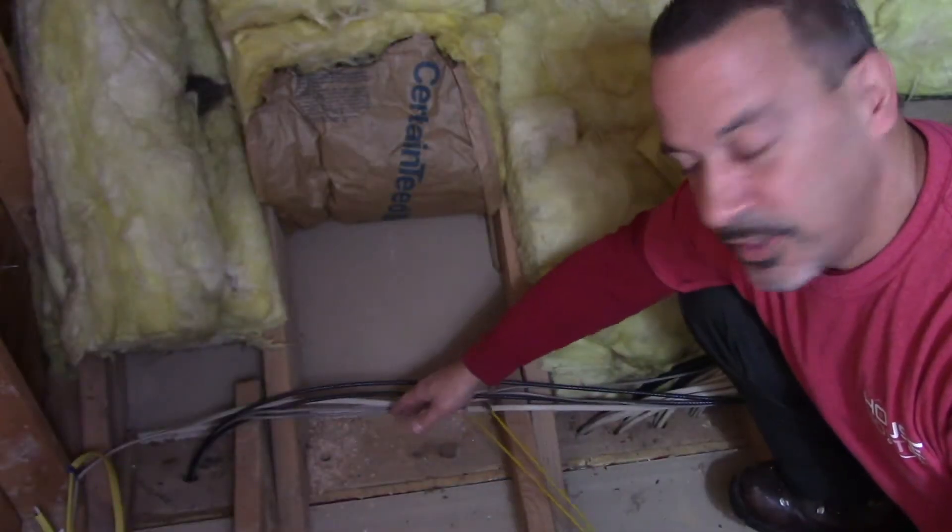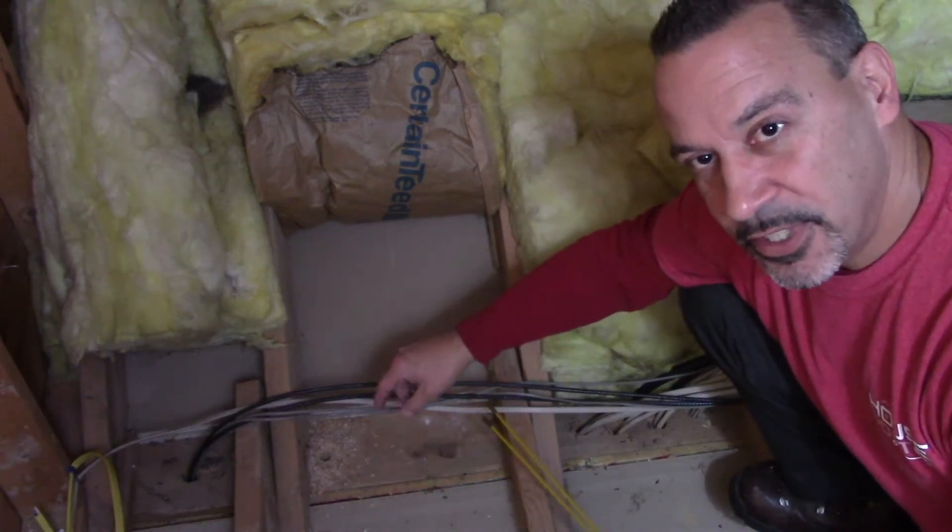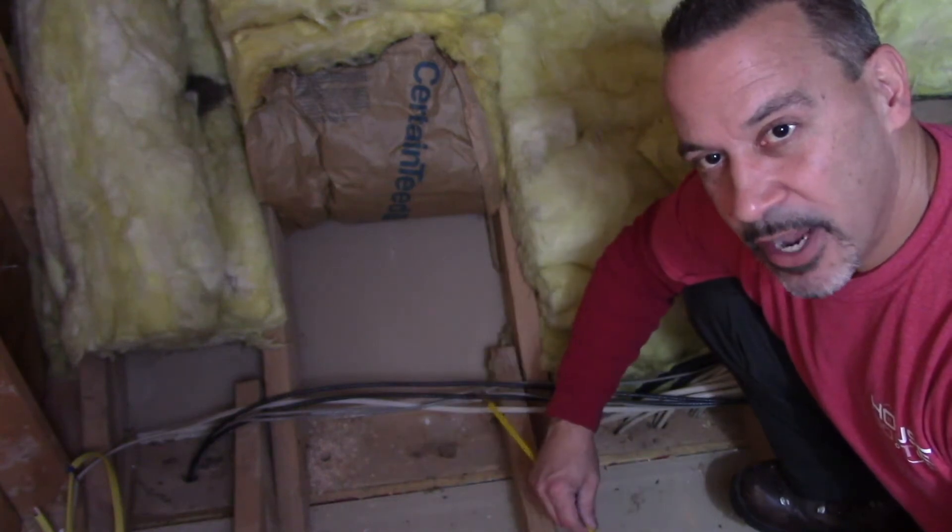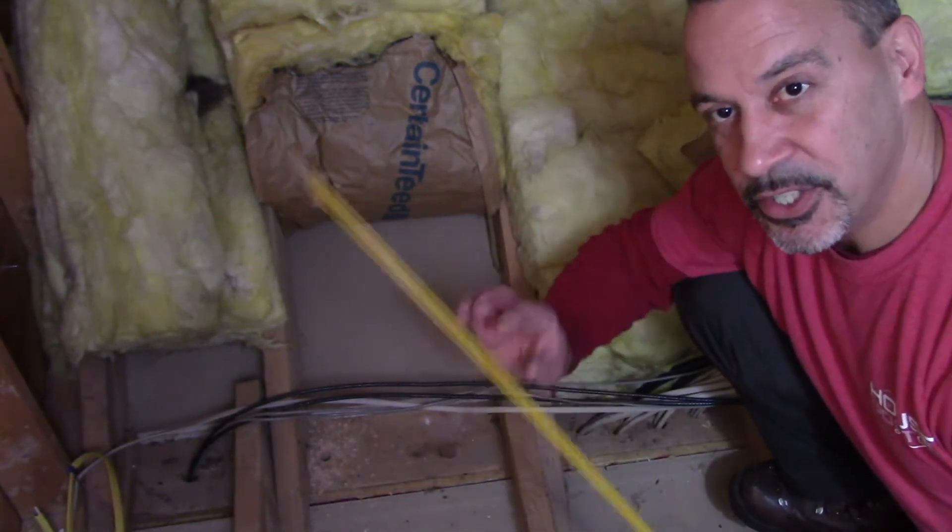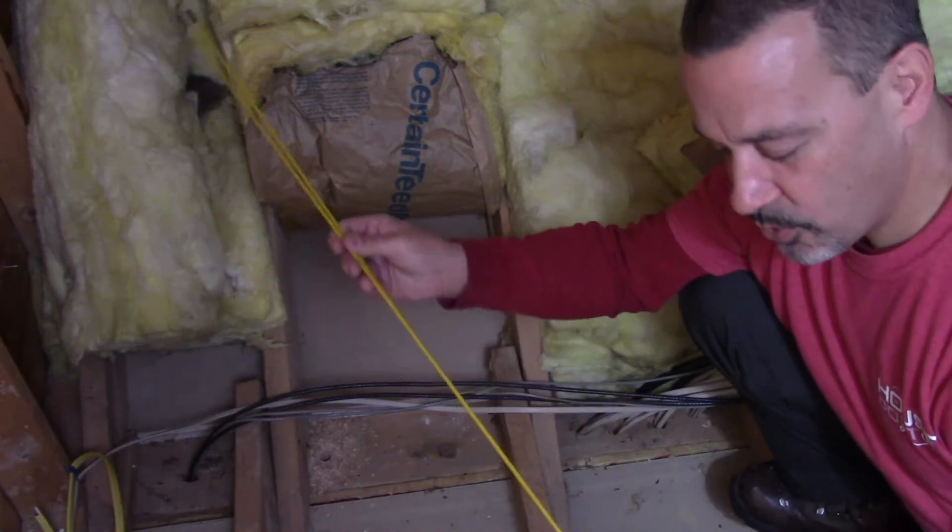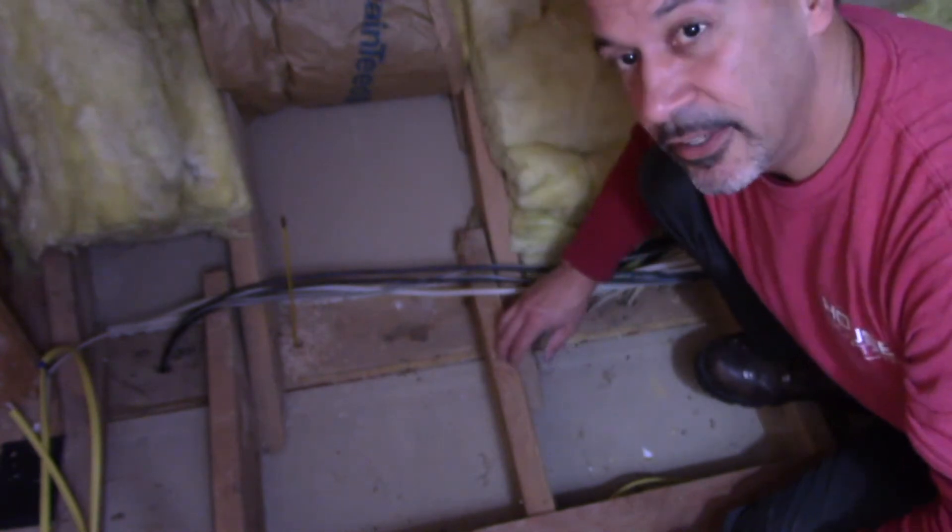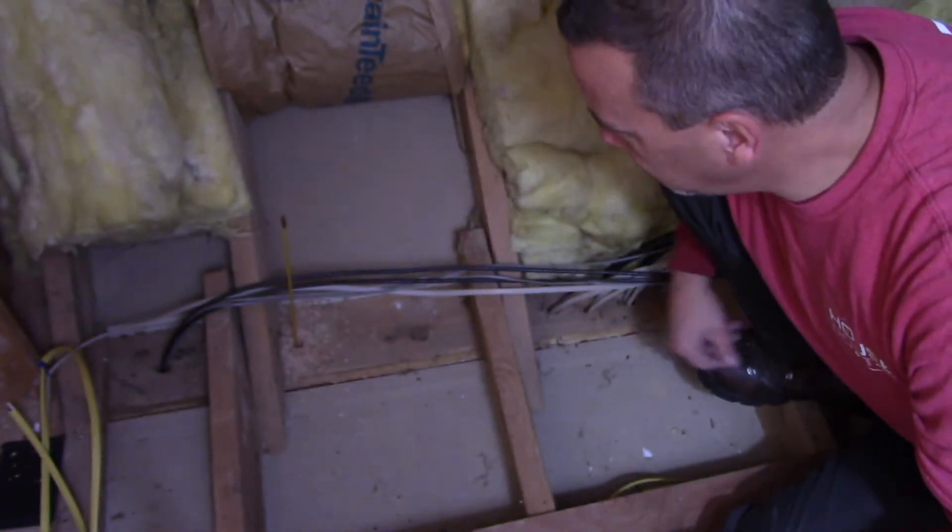If this wall didn't have insulation in it, I would probably just feed the wire down. It'd be easy enough to get my hand in there and grab it. But since it has insulation, I'm going to use these sticks. They're called fish sticks or wire feeding sticks. I should be far enough down in there now. Let's go downstairs and see if we can grab a hold of this.